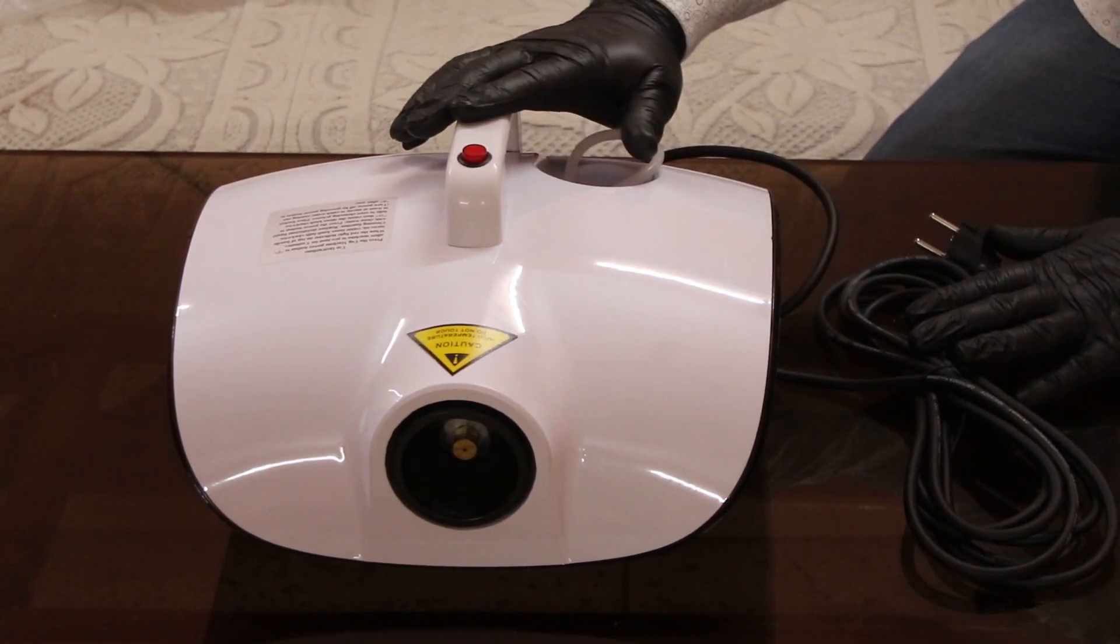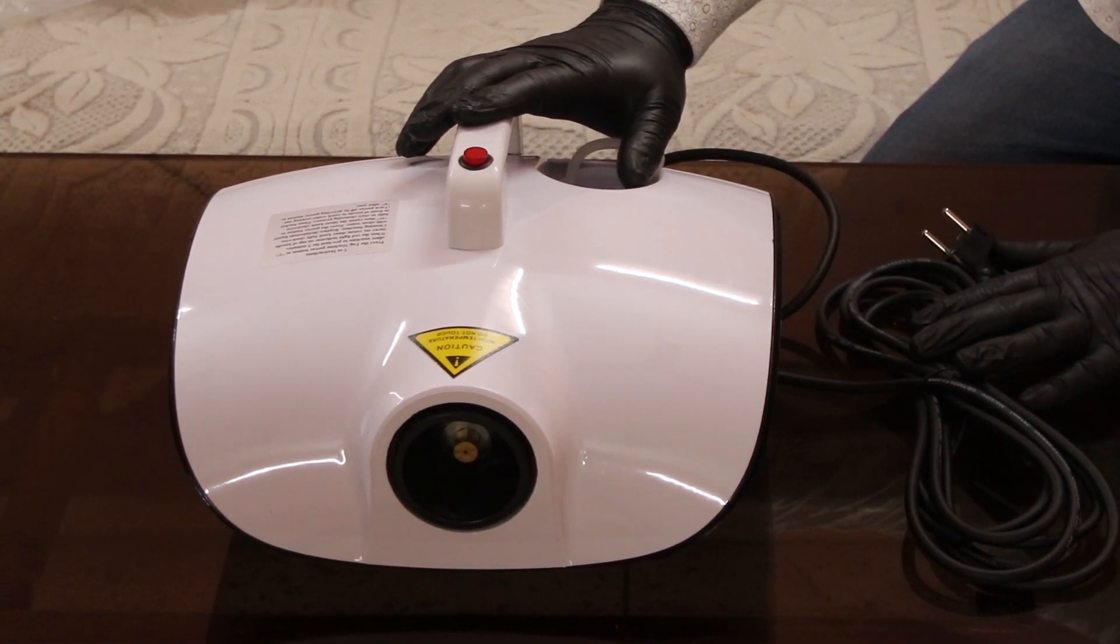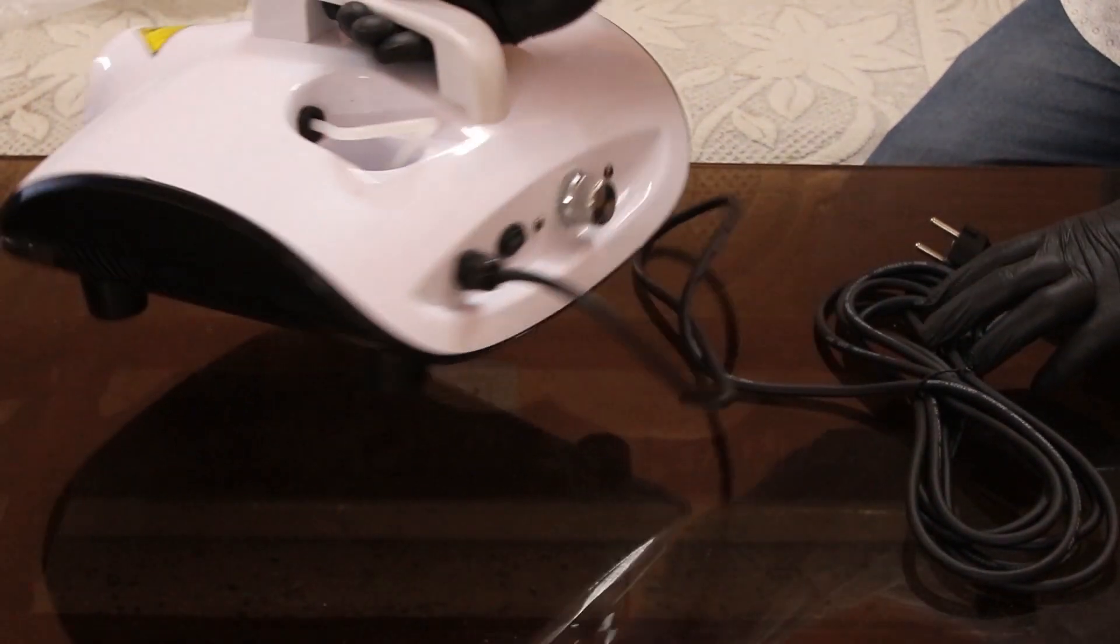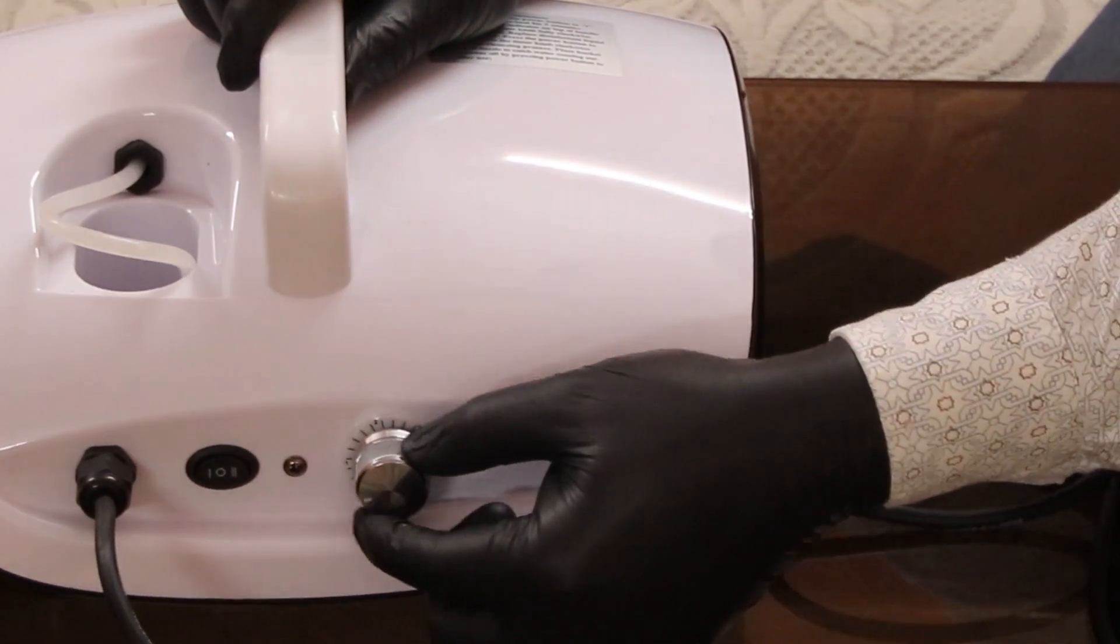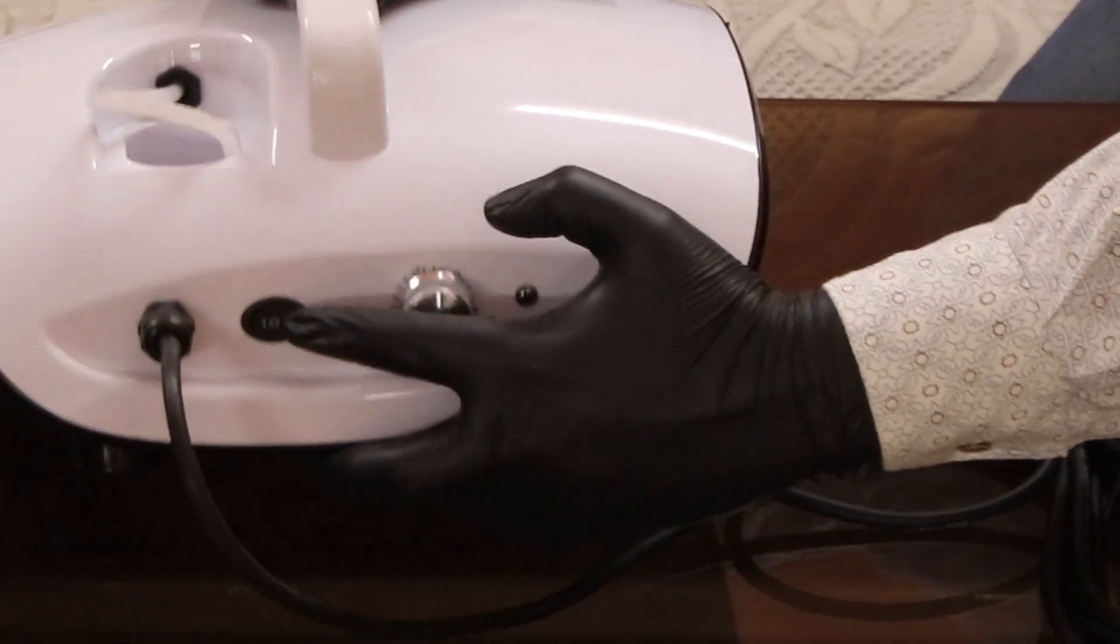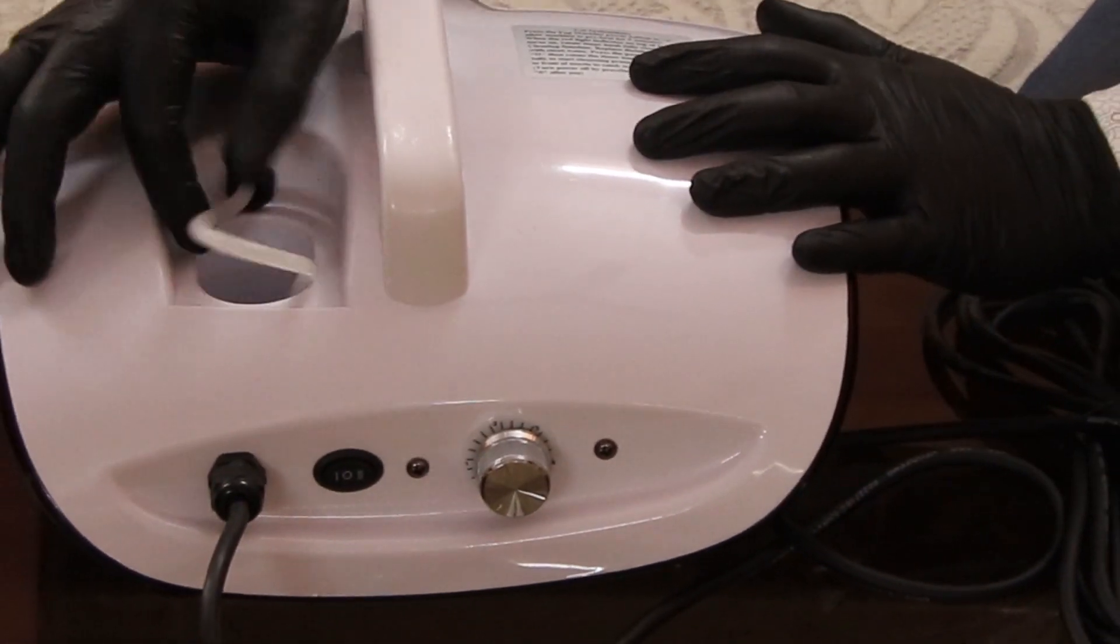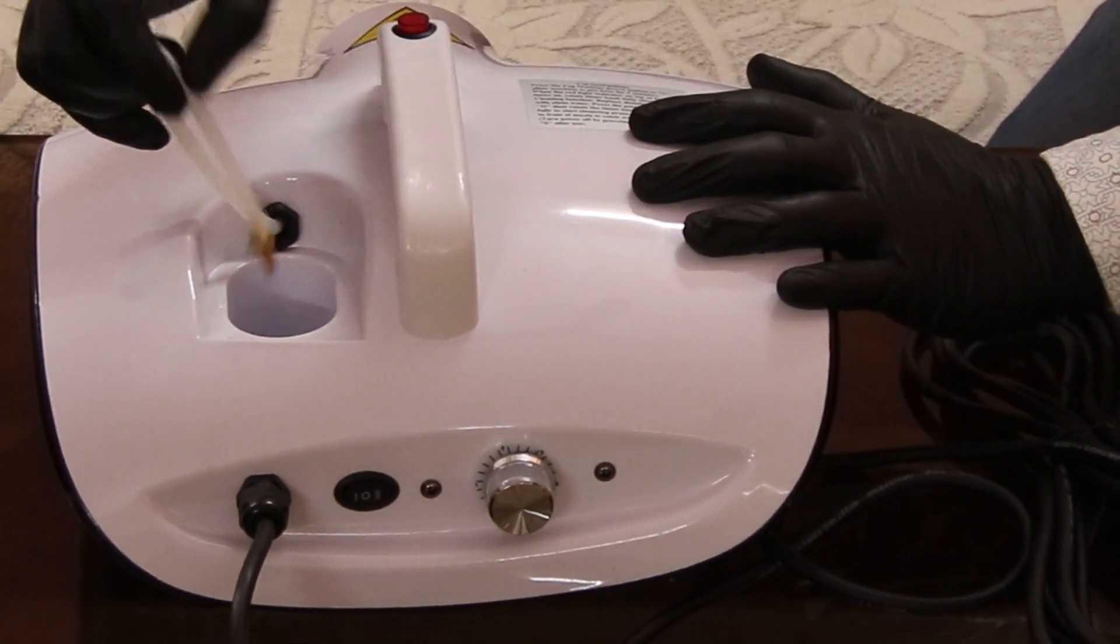Now let me tell you the specification of this machine. This is a 900 watt heating type fogger machine. Here is the copper nozzle, this is the light indicator, and this is a timer based machine. Here you can see the timer, this is the on and off switch. This is the space where you need to put the container for fogger liquid chemical, and this is the pipe.